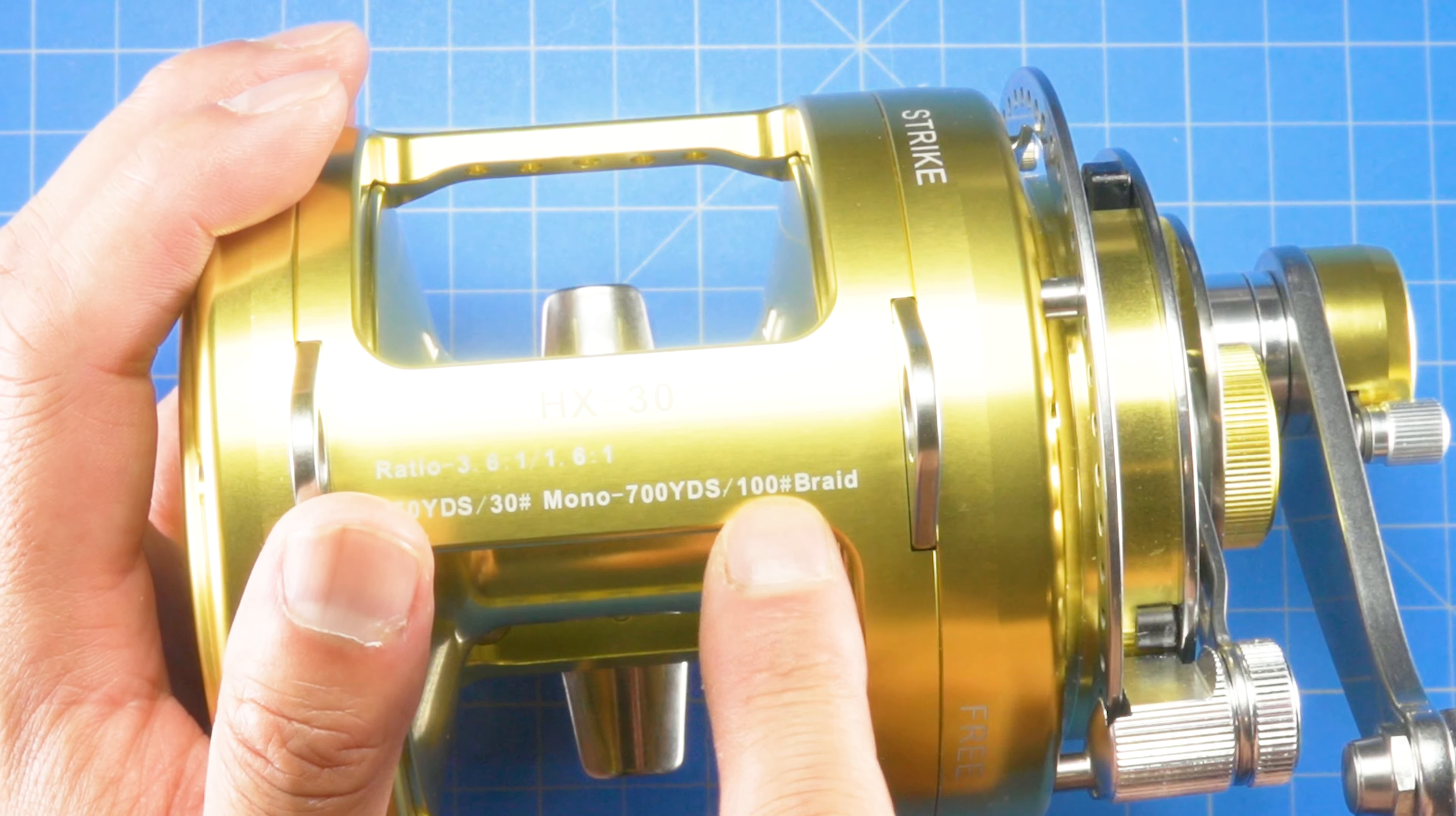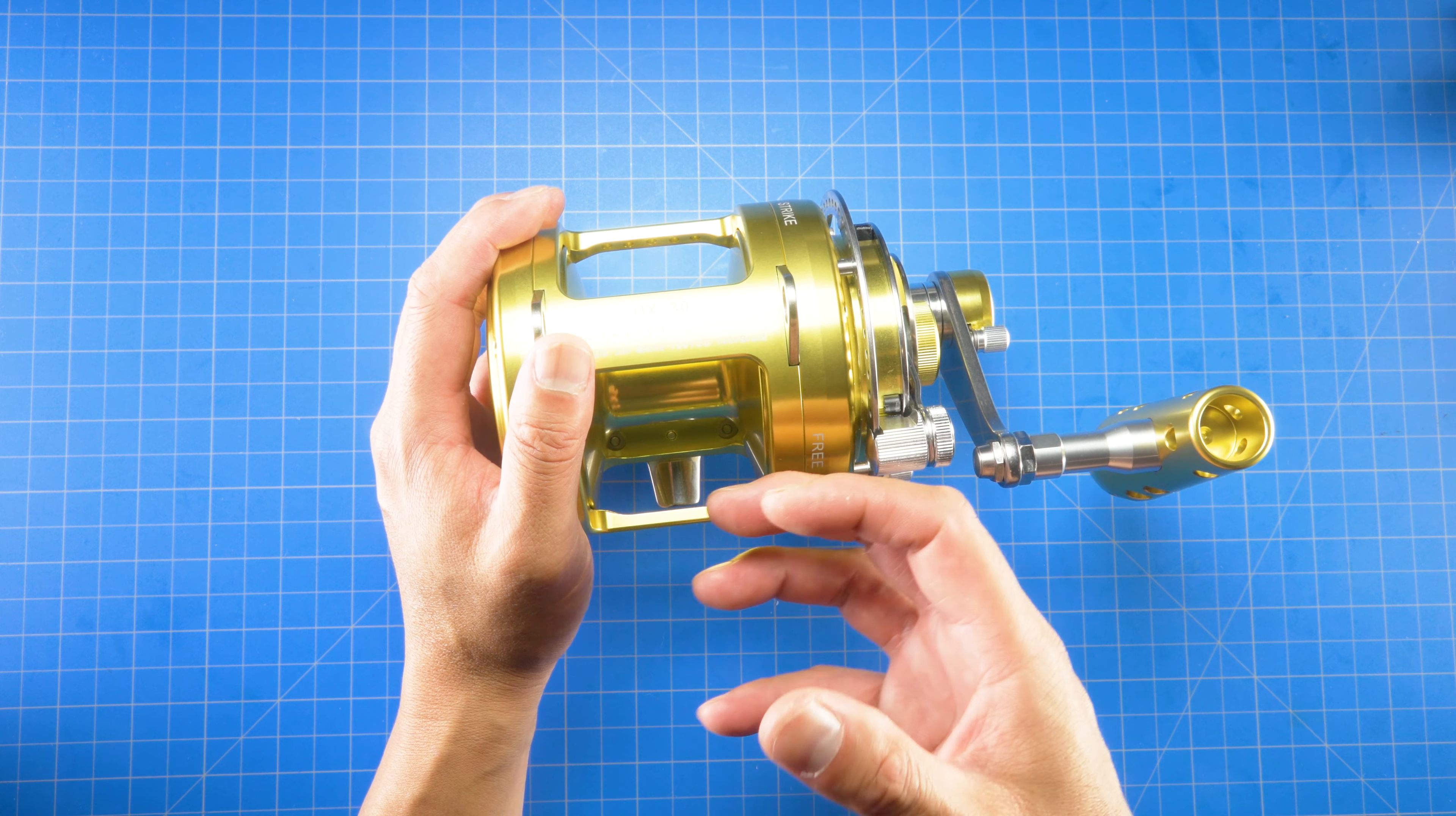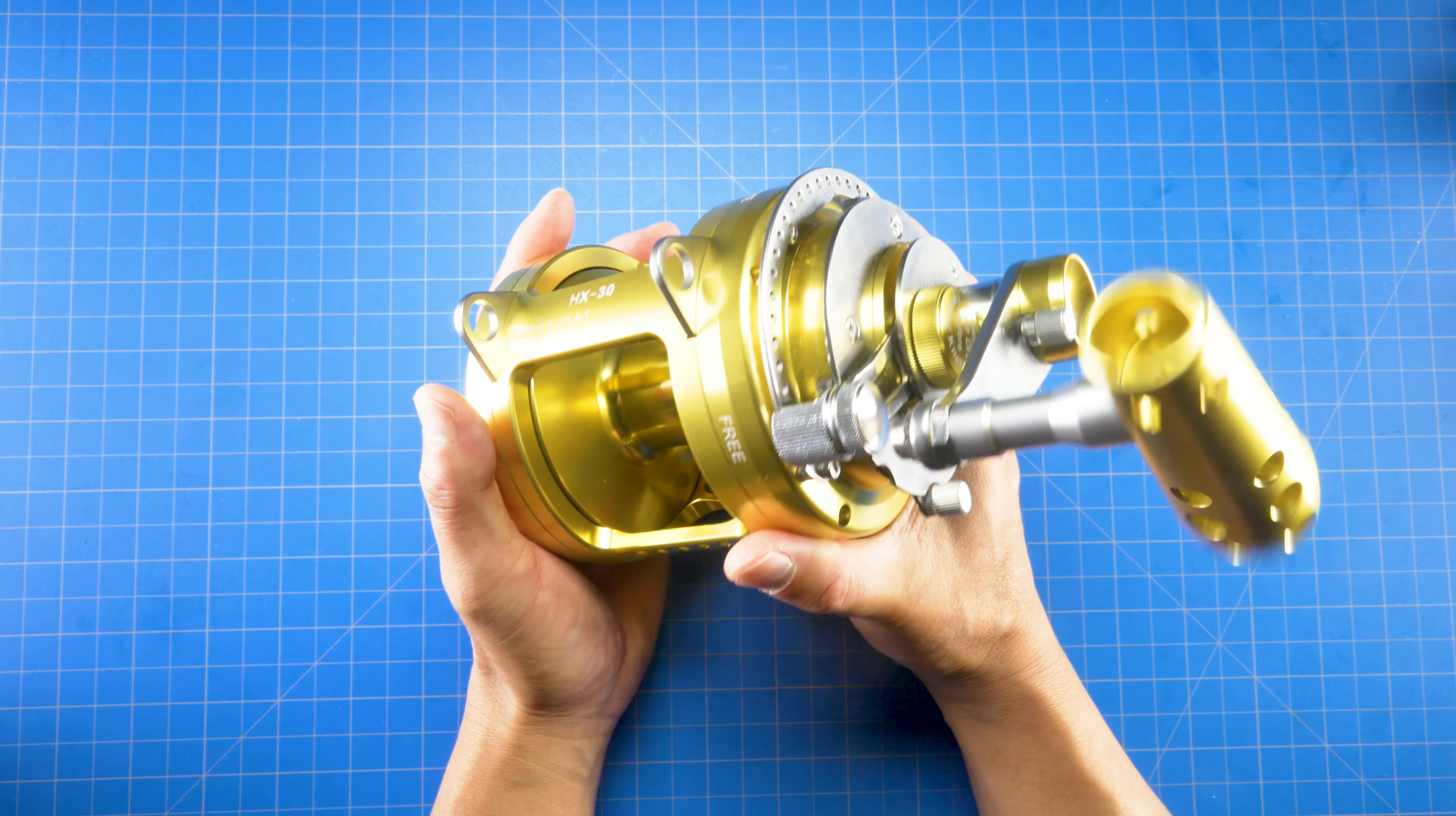For me, I'm going to put a 100 pound braid. It says 700 yards. I'm going to put a 100 pound braid, and I'll be somewhere around like maybe 25 pounds of drag, maybe up to 30. And that's going to be more than sufficient. Not even using max drag, I think we're really good to go.